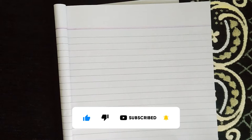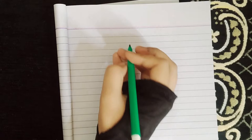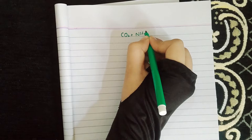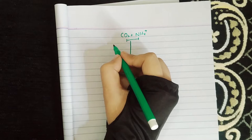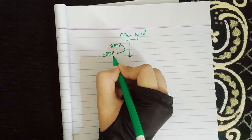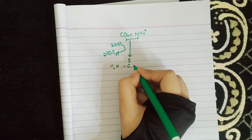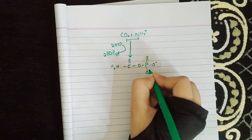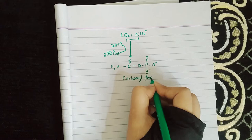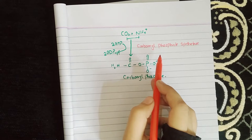The first step is to form Carbamoyl Phosphate. Carbamoyl Phosphate is formed by combining CO2 with NH4-positive (a form of ammonia) and ATP. They convert into ADP plus inorganic phosphate. The product is NH2-C double bond-O with a phosphate group attached, called Carbamoyl Phosphate. The enzyme used is Carbamoyl Phosphate Synthetase-1, abbreviated CPS-1.